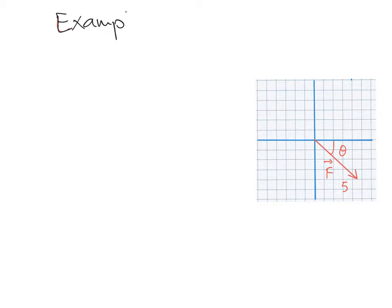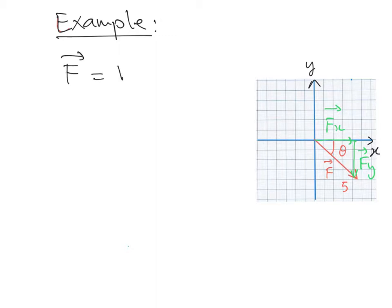In example number four, we have a force F that makes an angle theta with the X axis, and we need to find the components along X and Y. To do this, we draw a right triangle made up of two vectors Fx and Fy, so that we can write that the force F equals Fx plus Fy.